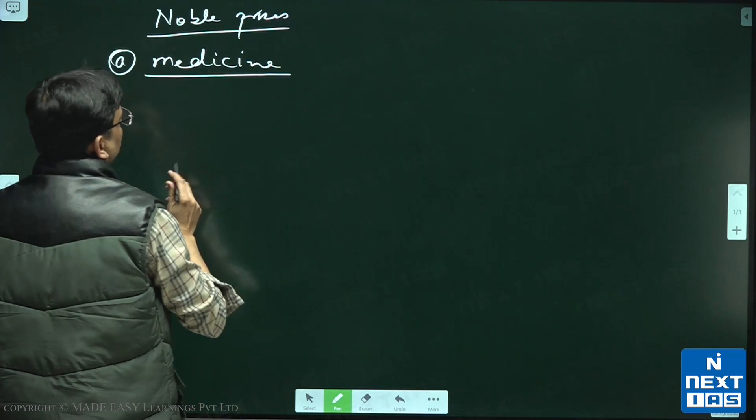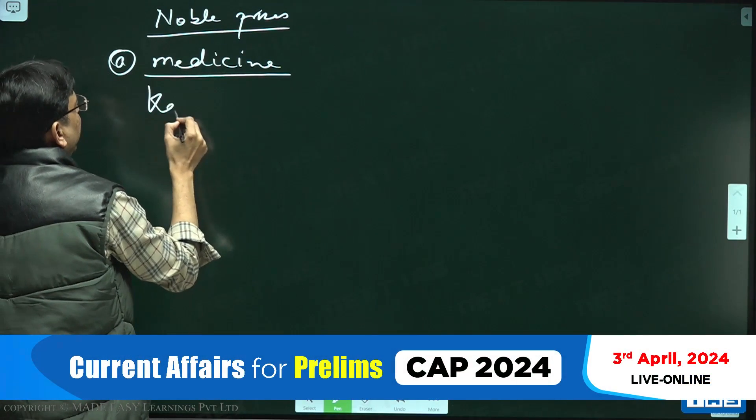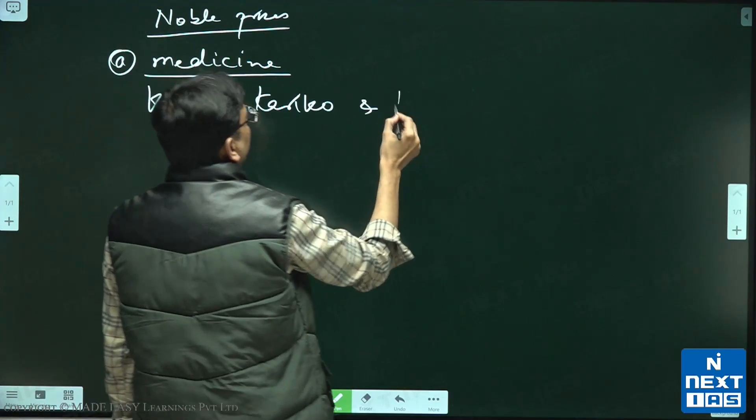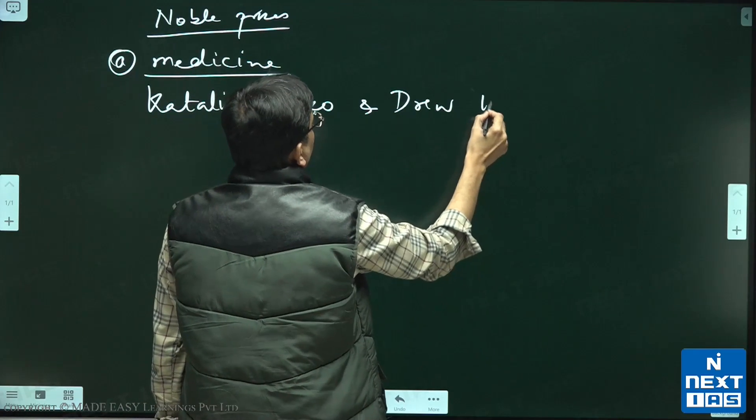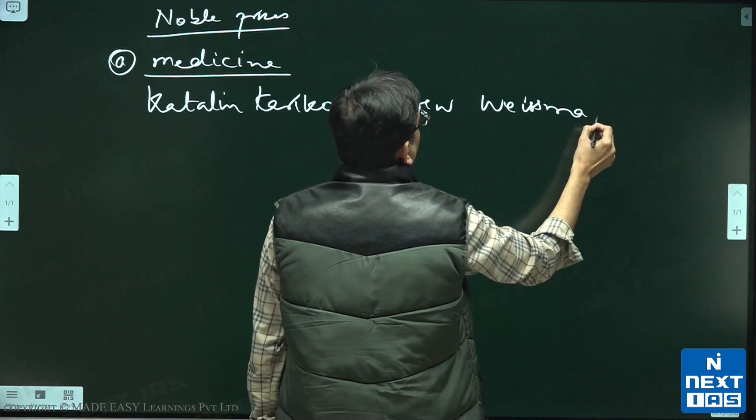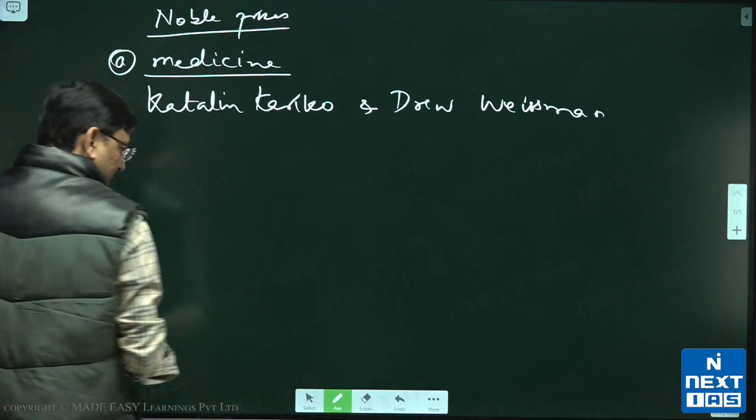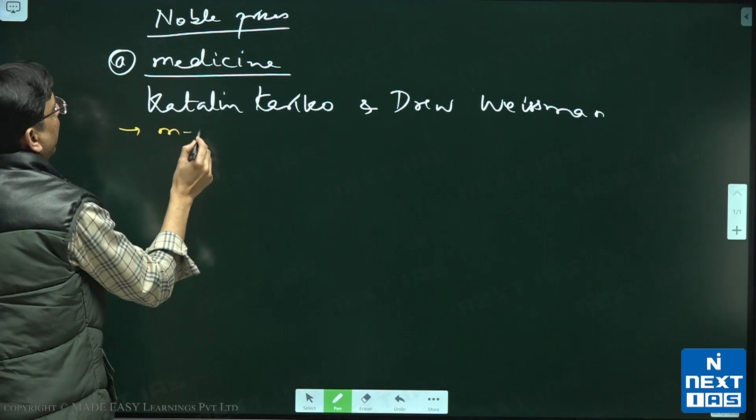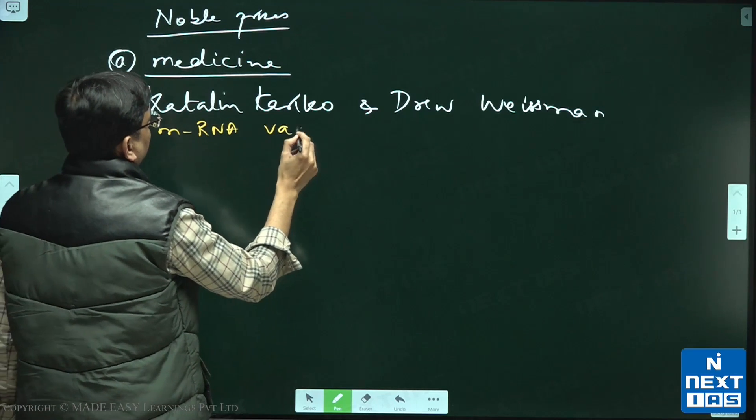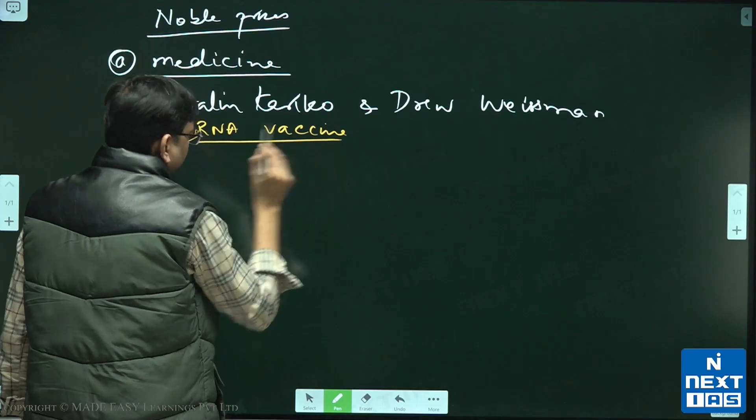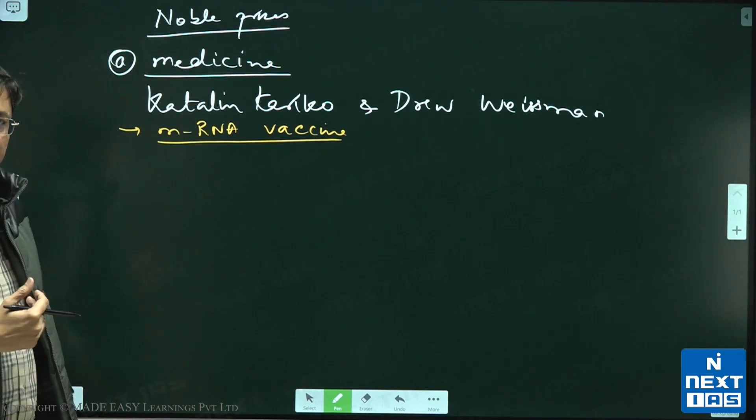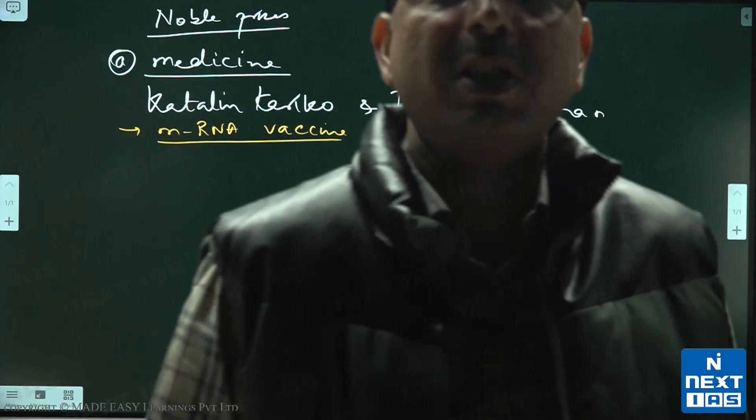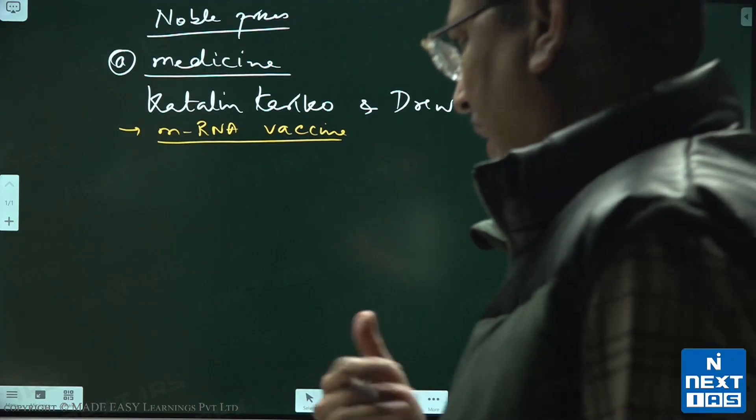The Nobel Prize in Medicine was awarded to Catalin Carrico and Drew Weisman, and the work they got the Nobel Prize for was basically about the mRNA vaccine. As you all know, mRNA - the DNA is read by the mRNA through the process of transcription, then from messenger RNA.